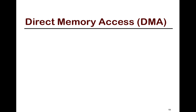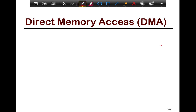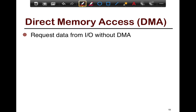We're going to be looking at direct memory access and then IO software. The sole purpose of direct memory access is to help the CPU interact with slow IO devices. Its goal is to make sure that the CPU doesn't busy wait when transferring data to the IO device. Think of it as an offload engine — the CPU offloads the work of transferring data to the IO device to the DMA.